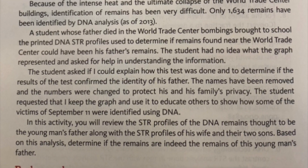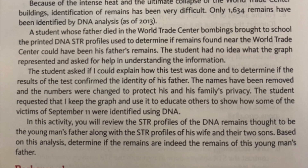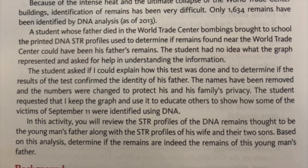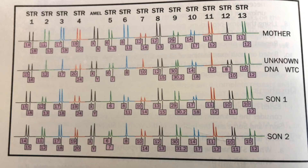The names have been removed and the numbers were changed to protect his and his family's privacy. The student requested that I keep the photograph and use it to educate others to show how some of the victims of September 11th were identified using DNA. In this activity, you will review the STR profiles of the DNA remains thought to be the young man's father along with the STR profiles of his wife and their two sons. Based on this analysis, determine if the remains are indeed the remains of this young man's father.